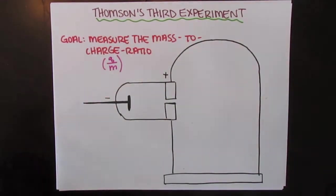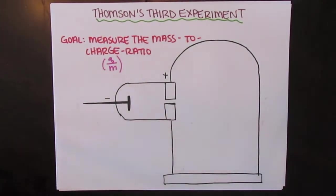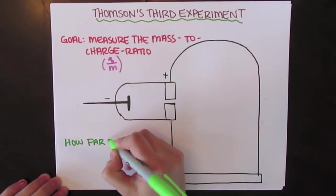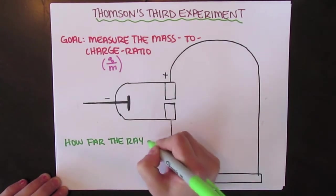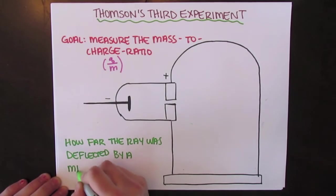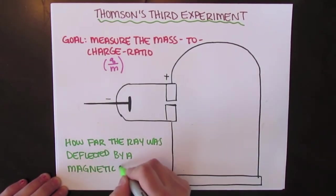To do this, he measured how far the ray was deflected by a magnetic field to get its velocity. He found that the mass-to-charge ratio was over a thousand times lower than that of a hydrogen ion, suggesting that the particles were either very light or very highly charged.